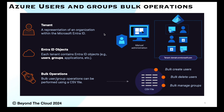In this hands-on lab, what we are going to do: we are going to bulk upload our users, we are going to bulk delete users, and we are going to bulk manage the groups as well. At first, in our operations, we have a blank tenant ID or Microsoft Entra ID which does not have any kind of users and groups inside it. We will create a couple of users and groups. The process is sometimes manual — you can create users and groups manually one by one in the portal.